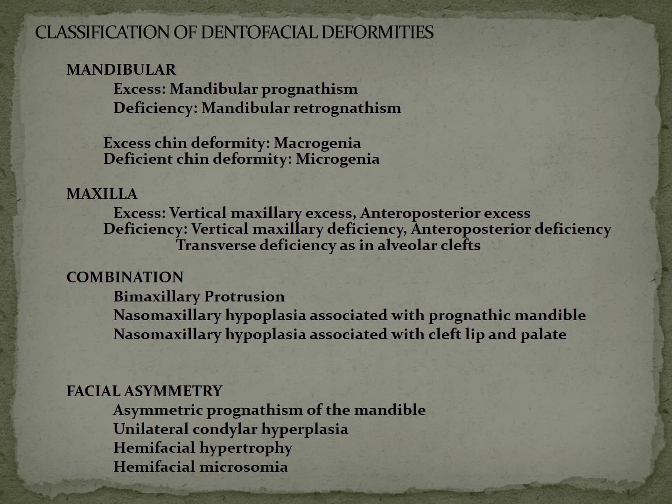Vertically, excessive growth is called vertical maxillary excess; anteroposteriorly, a protruding maxilla is anterior-posterior excess. Deficiencies include vertical maxillary deficiency, anterior-posterior deficiency, and transverse deficiency as seen in alveolar clefts. When both mandible and maxilla are involved, you can have bimaxillary protrusion, nasomaxillary hypoplasia with a prognathic mandible, or nasomaxillary hypoplasia associated with cleft cases. You also have facial asymmetries: asymmetric prognathism, unilateral condylar hyperplasia, hemifacial hypertrophy, and hemifacial microsomia.